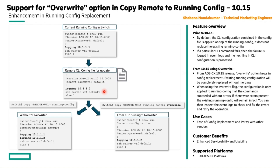Let's consider this is the remote config file. Here, the logging is set to a different IP address 10.1.2. Let's see the two methods present. One is the legacy copy running configuration without the override option. When we use the remote copy to running config, along with the existing running configuration of the logging server 10.1.1, you will see the new logging configuration 10.1.2 added.